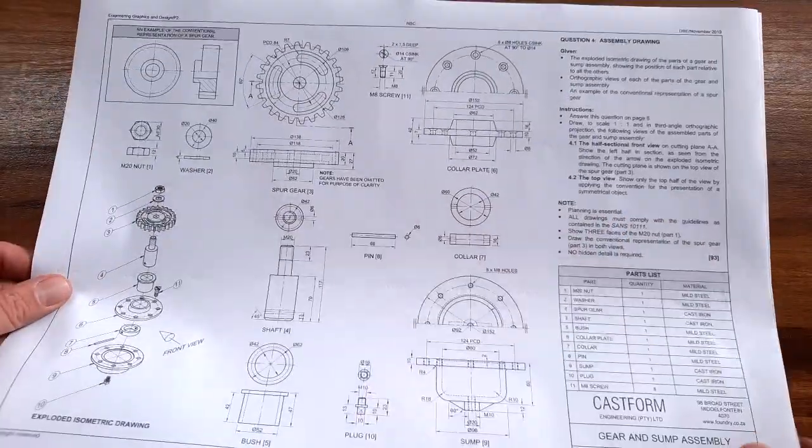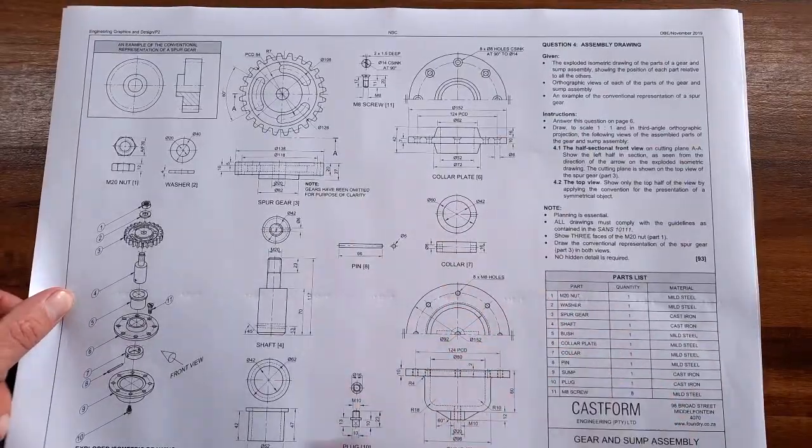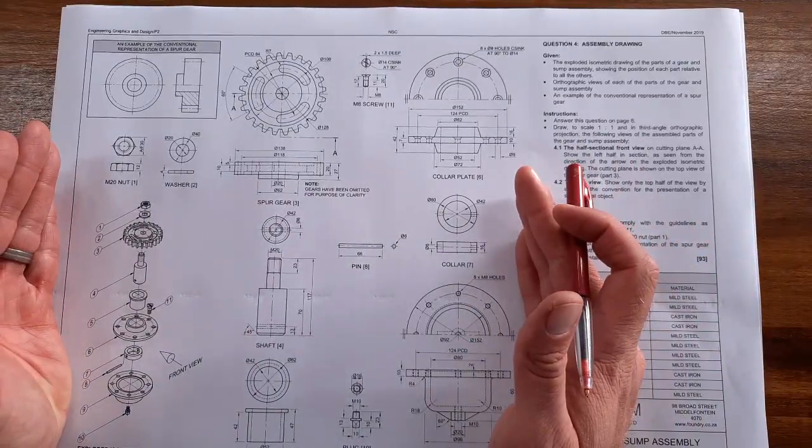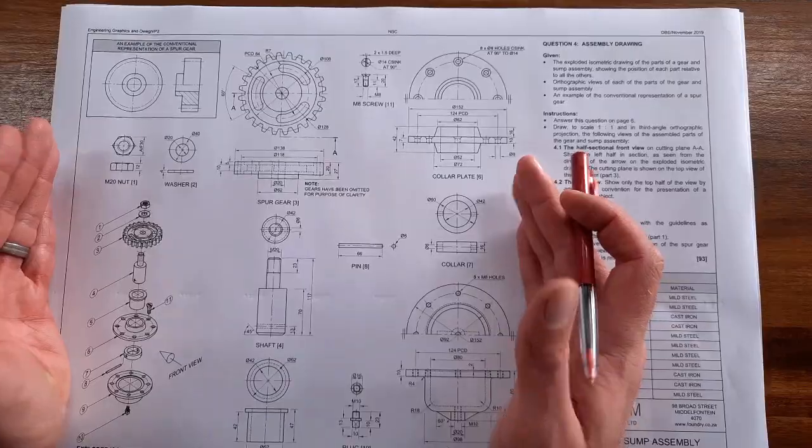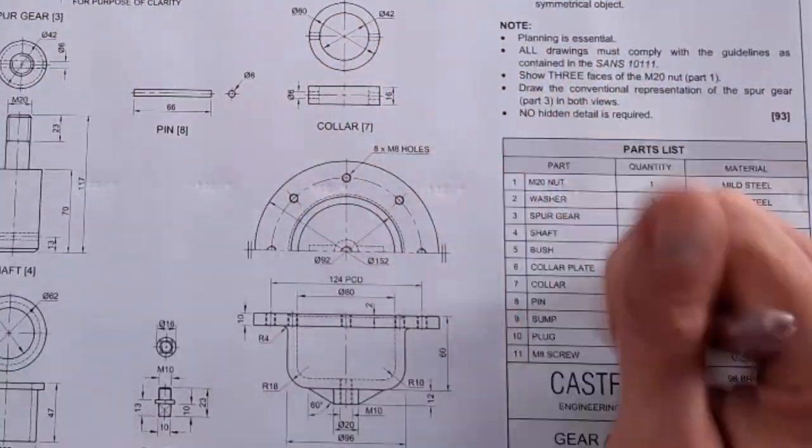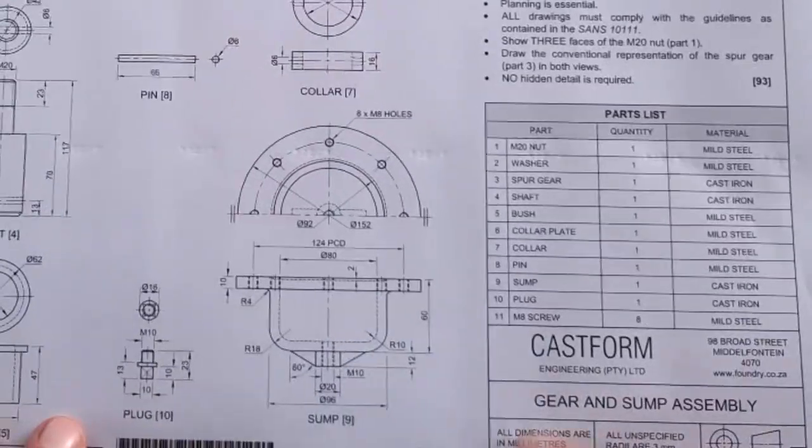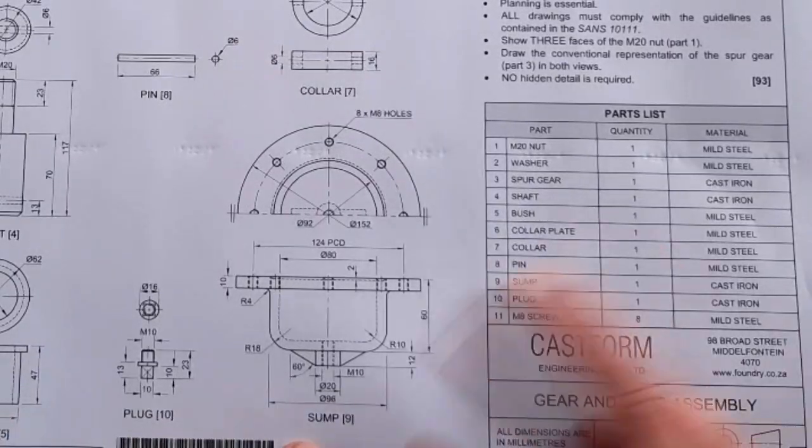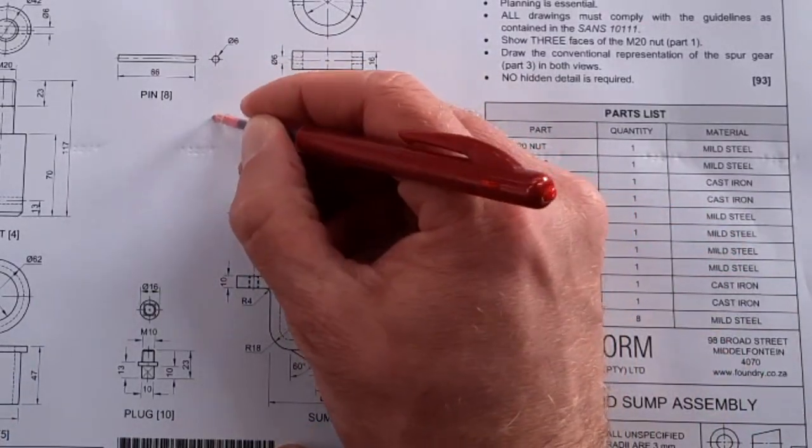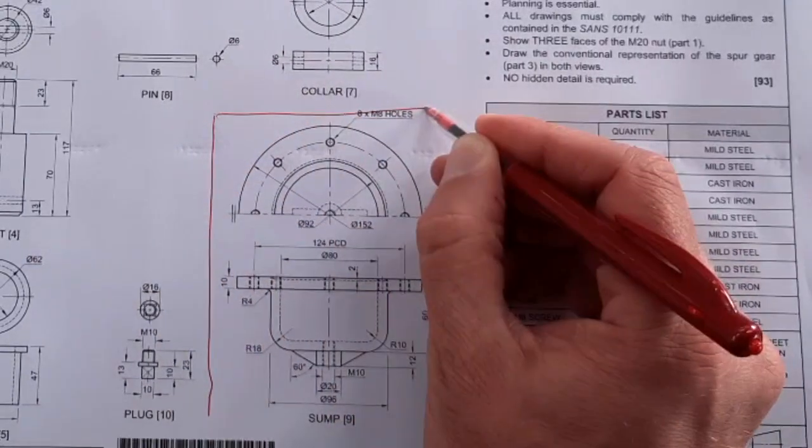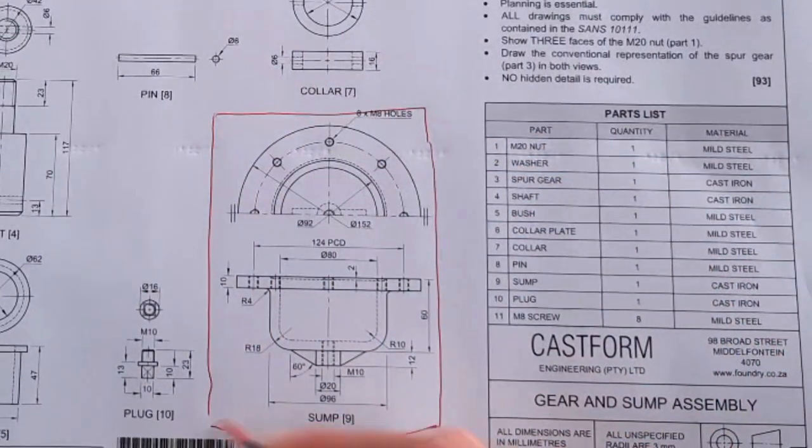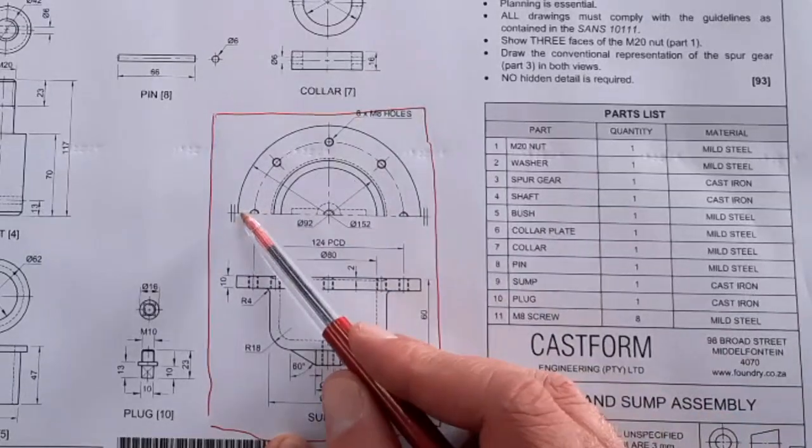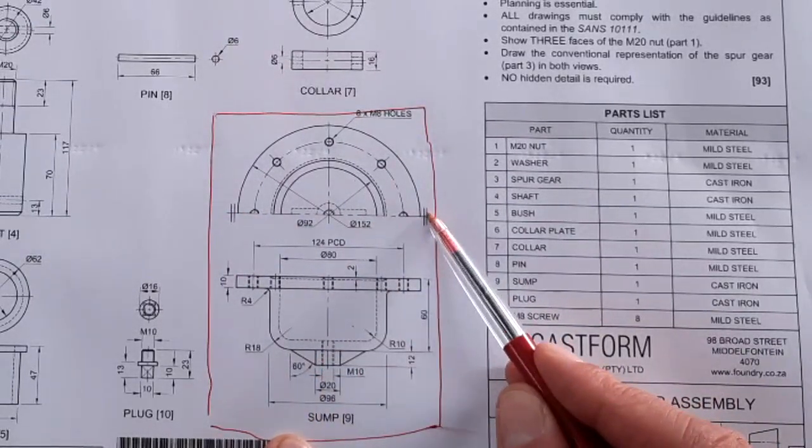Here we are, looking at the question as it was asked two years ago. When you get these drawings, understand what you are looking at - this is third angle orthographic. Each one of these drawings resembles one of these components on the right hand side. We can take any one of them, for instance the sump here, number nine. We've got two views of the sump - you can actually isolate it for yourself so you can clearly see what you're looking at.